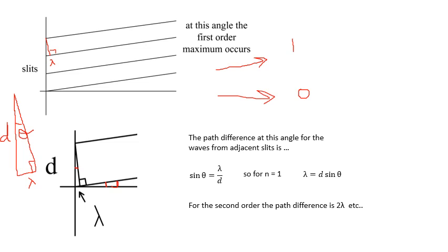And you should see that in this case, for the first order, lambda equals D sine theta. And for the second order, it would be 2 lambda equals D sine theta, and then 3 lambda, etc. So N lambda equals D sine theta, or in AQA, you say D sine theta equals N lambda for some weird reason.